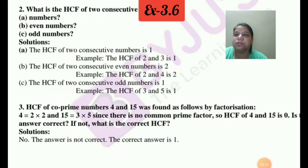Okay students, so now we are going to discuss Exercise 3.7 question number 2. Question number 2 says what is the HCF of 2 consecutive numbers, and then Part B is HCF of 2 consecutive even numbers, and Part C is consecutive odd numbers. So first of all we are going to discuss Part A.